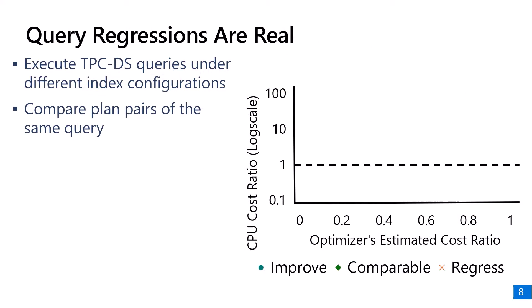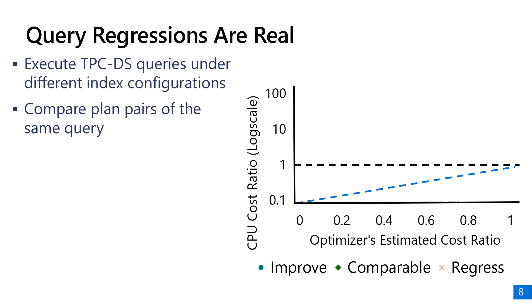Unfortunately, query regressions are not uncommon in practice. In this micro-benchmark, we execute TPC-DS queries under different index configurations and compare the estimated and execution cost of a pair of plans for the same query. The figure shows the ratio of estimated cost of a pair of plans and the ratio of their execution cost. Because the estimated cost ratio is less than 1, the new plan is estimated to be cheaper than the alternate plan. Ideally, we would like to see the estimated cost ratio equal to the CPU cost ratio in execution.